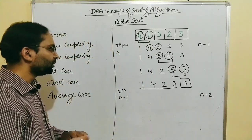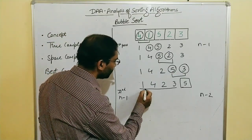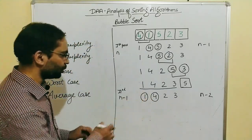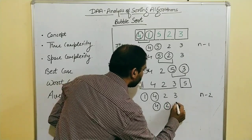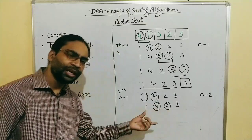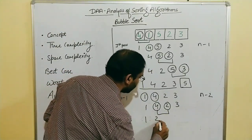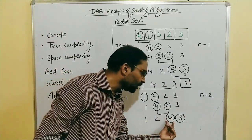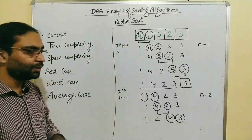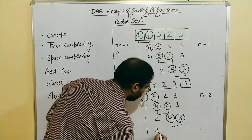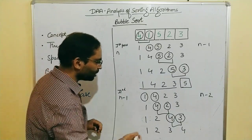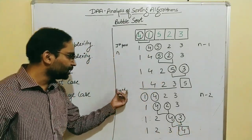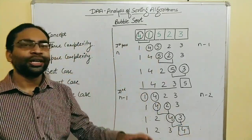So for the second pass with elements 1, 4, 2, and 3: we compare 1 and 4 — since 1 is smaller, no swap. Then 4 and 2 are compared — since 4 is larger, they are swapped, giving 1, 2, 4, 3. Then 4 and 3 are compared — since 4 is larger, they are swapped, giving 1, 2, 3, 4. The element 4 is now on its correct position.